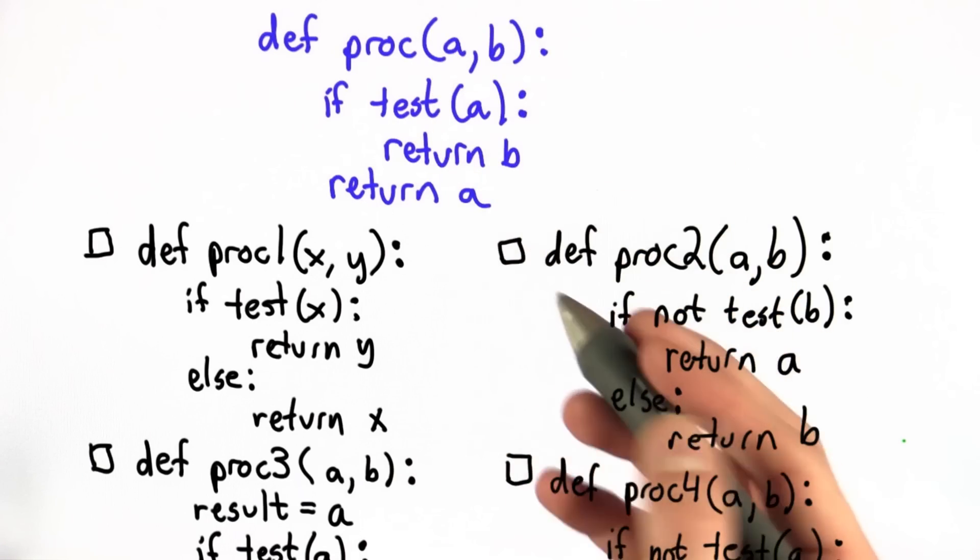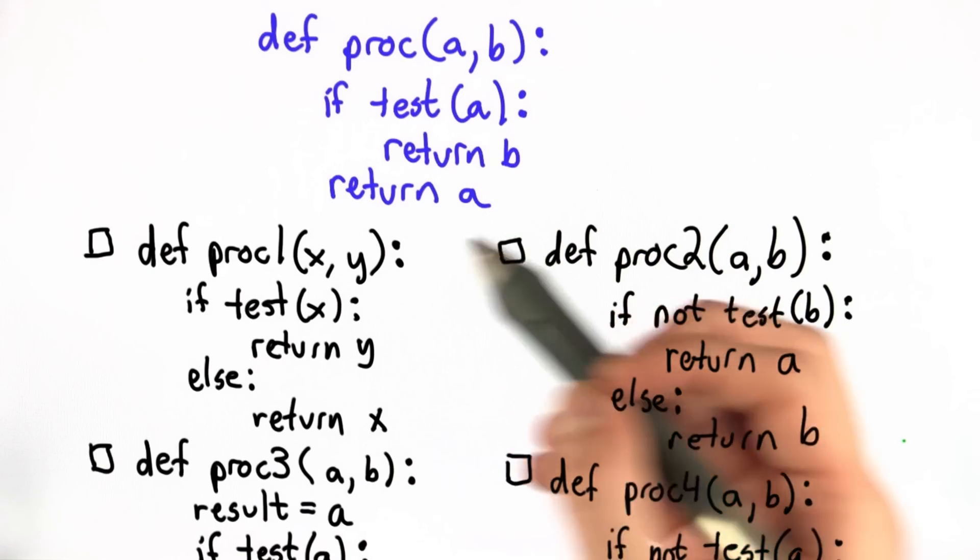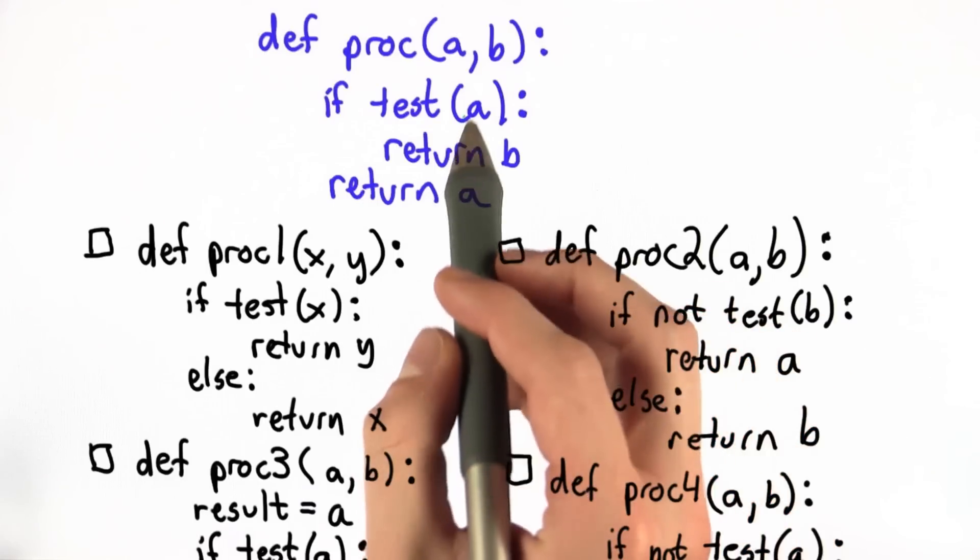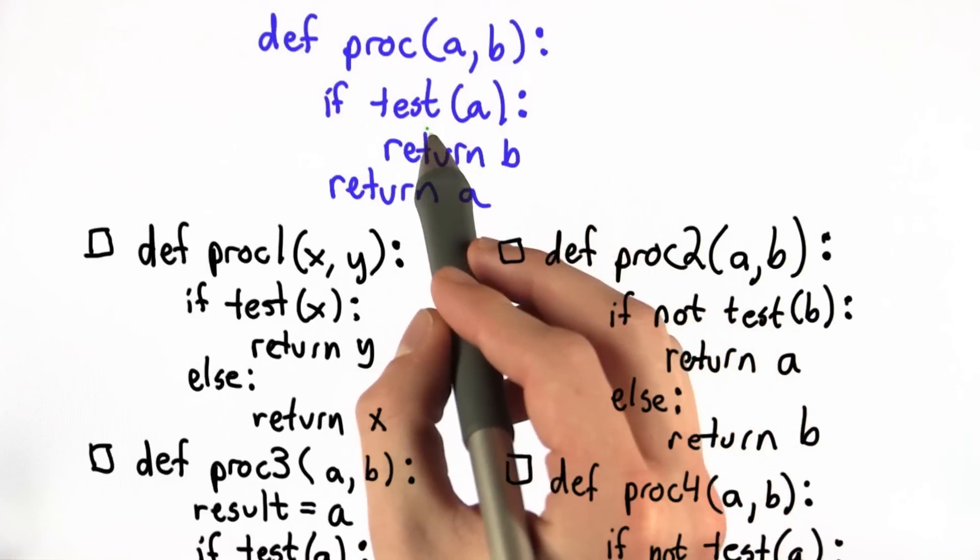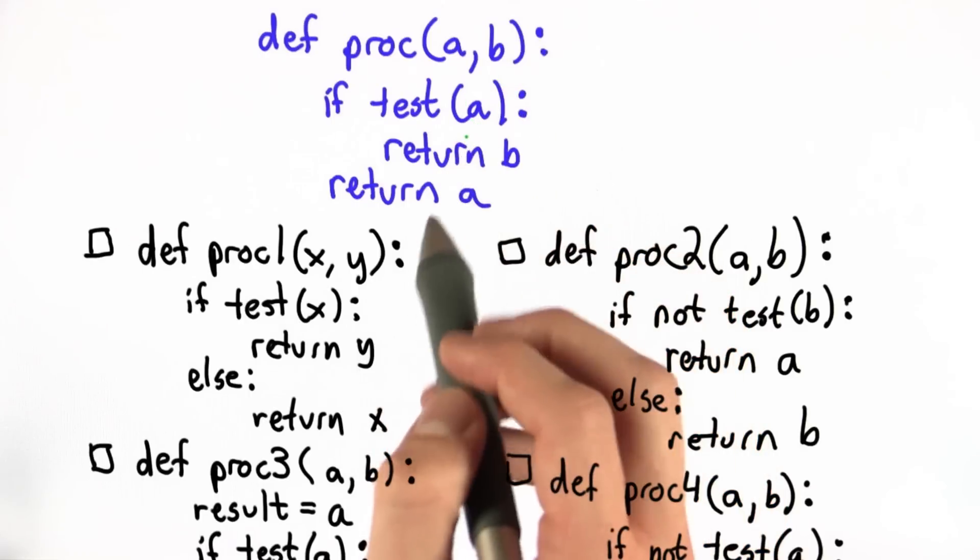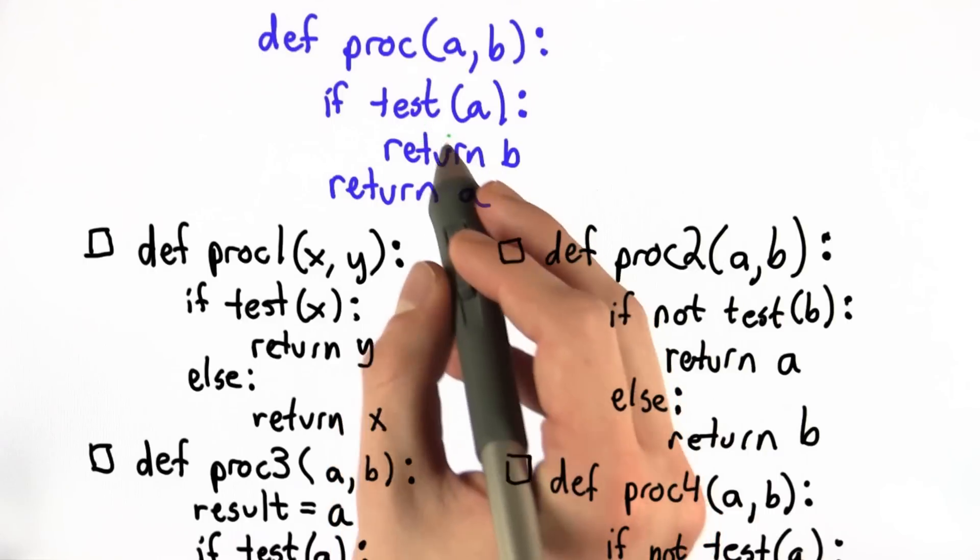In order to solve this problem, you need to have a good understanding of what the original function, proc, does. So let's take the two cases that really embody the output of this function. There are two inputs, but the output only depends on the value of a, specifically the value of the function test on a.